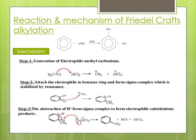There are certain limitations to Friedel-Craft alkylation. Limitation 1: The reaction can lead to polyalkylation — instead of getting a monosubstituted product, we get a polymethyl substituted product. To prevent this, excess benzene is used in the reaction. Limitation 2: Carbocation rearrangement of the alkyl halide can occur, meaning we may not get the expected product. Limitation 3: We cannot use vinyl halides because they cannot give this kind of reaction.